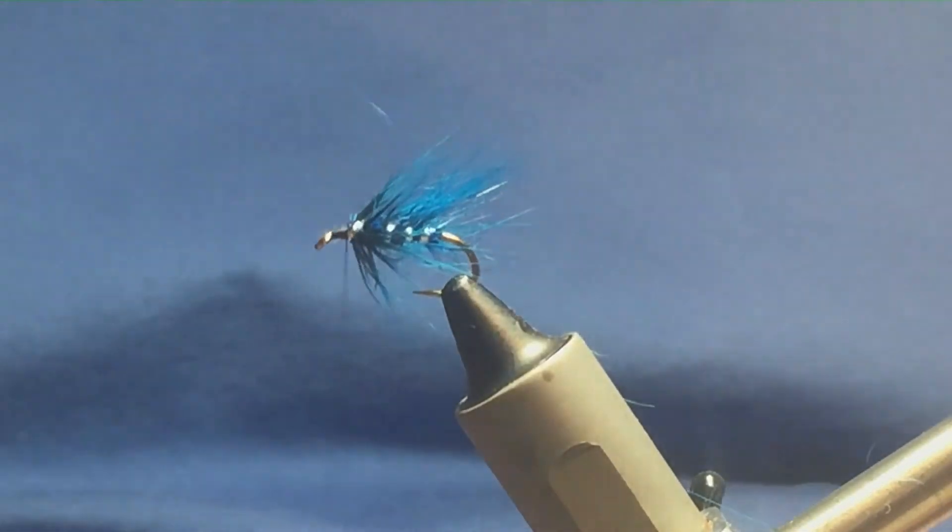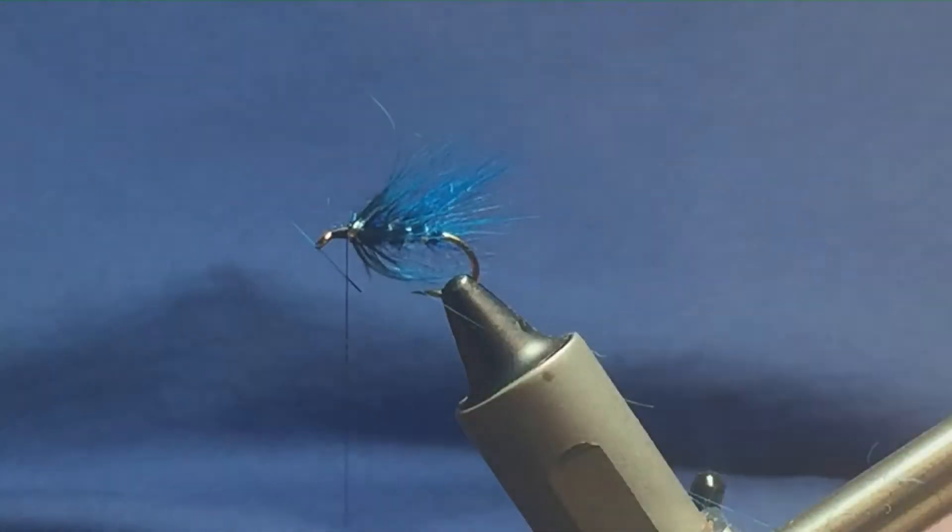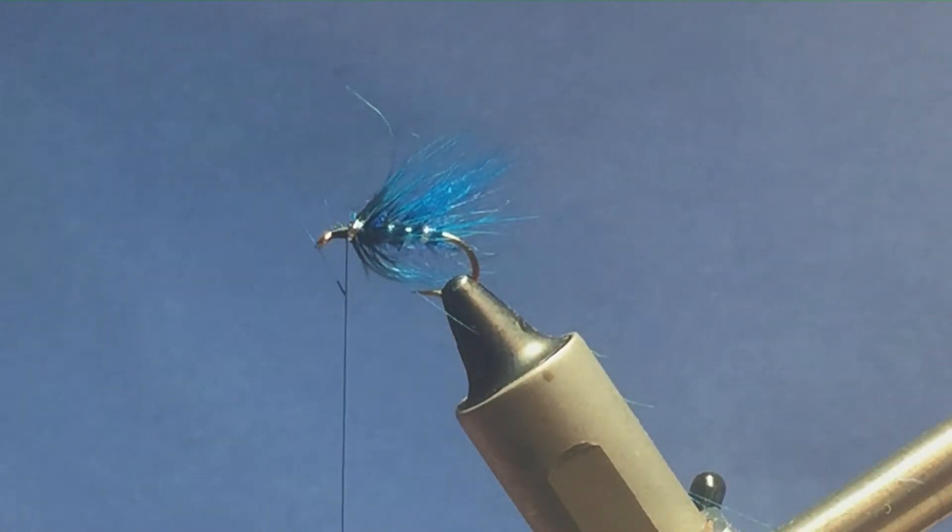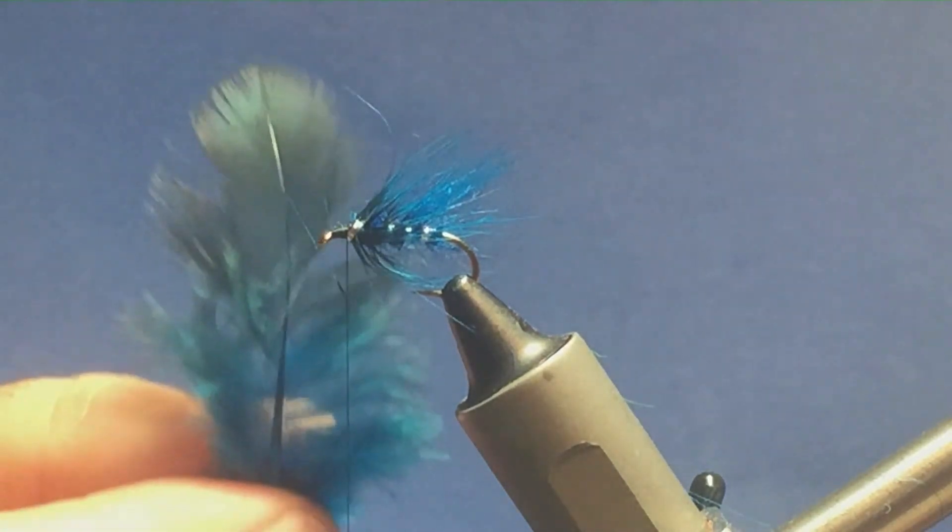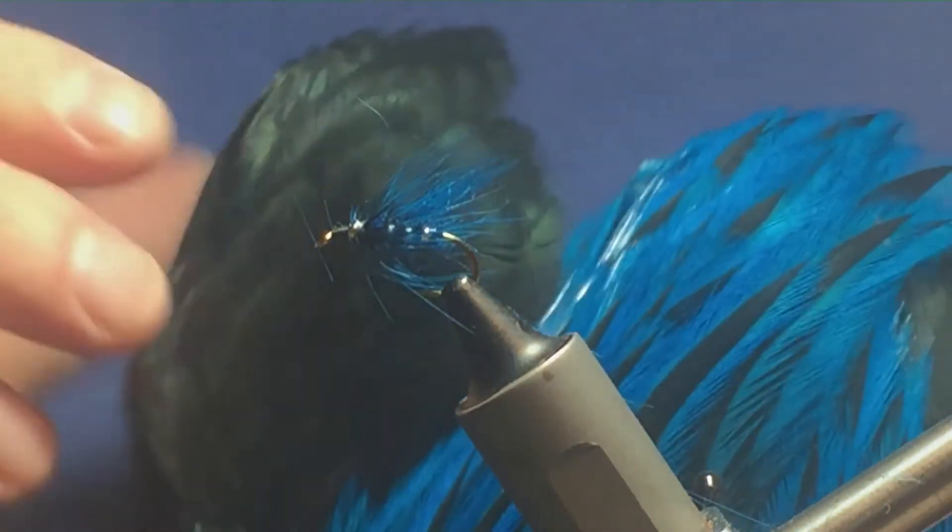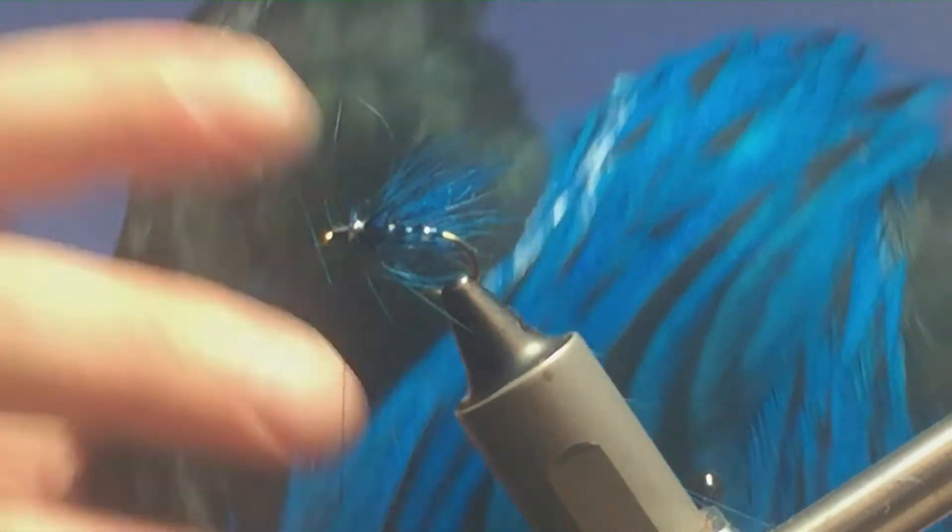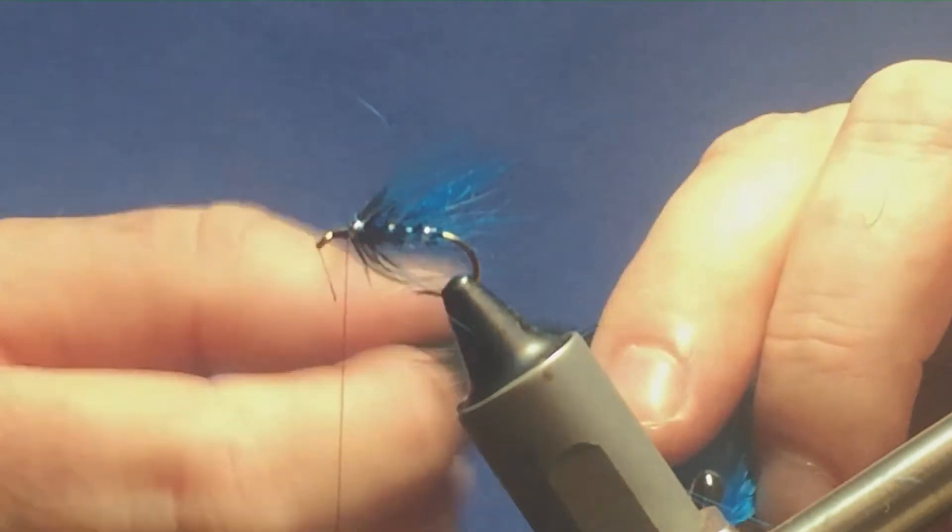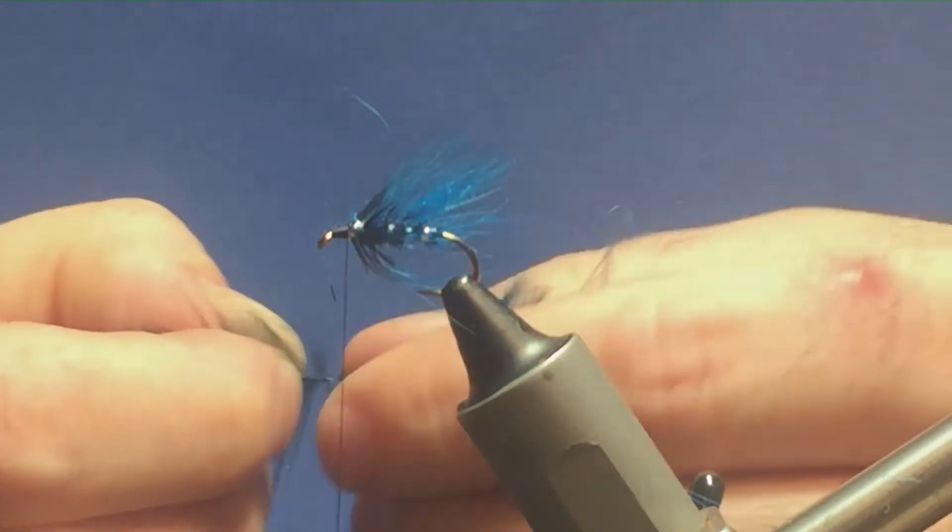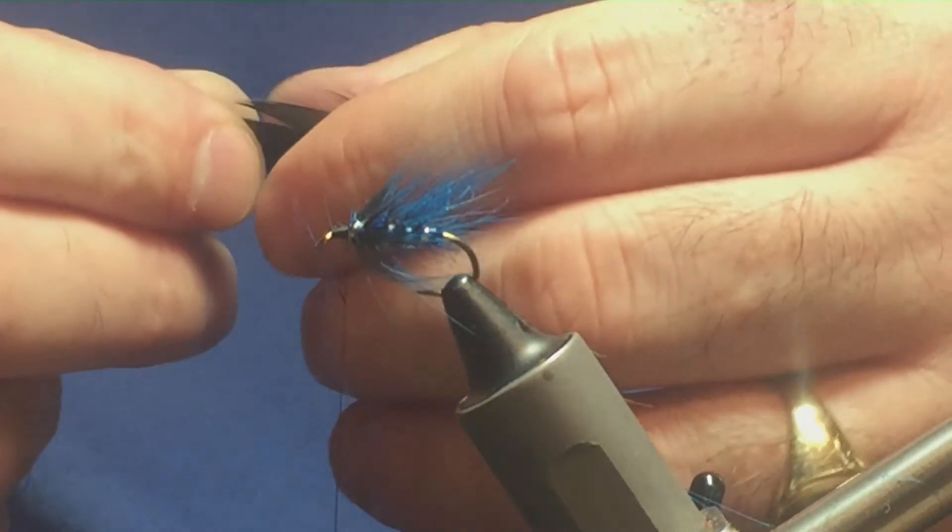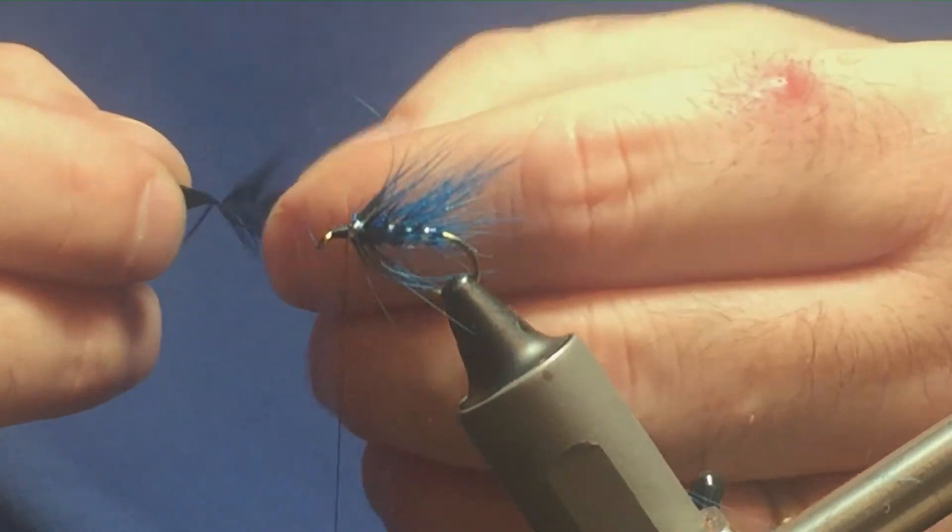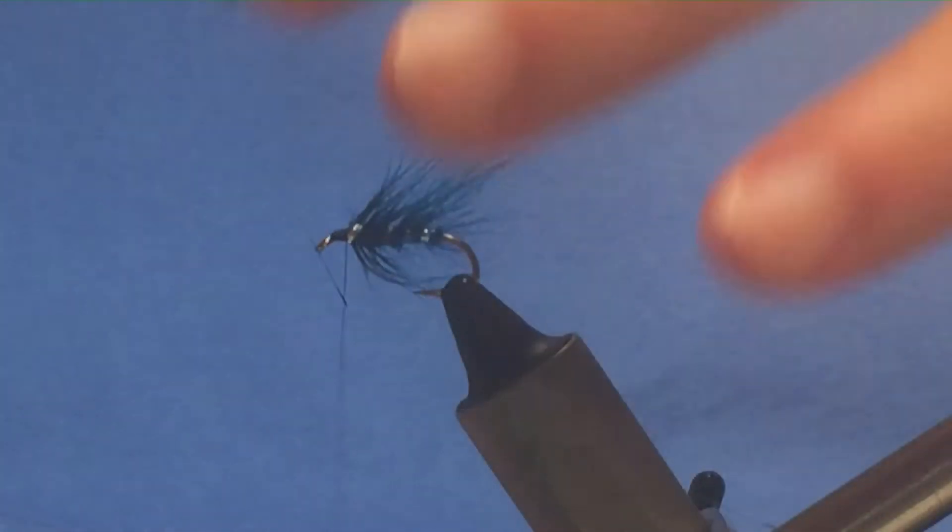Now traditionally on the Donegal Blue it's a black hen hackle that you use, but I'm going to use this. This is just the wee hackles here that are at the top of the badger, so just looking to use up some of the materials that I've got. So just come in, get your tip, stroke your fibers back to reveal your tip, and then just